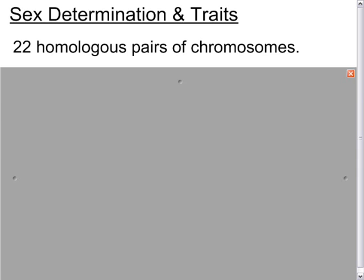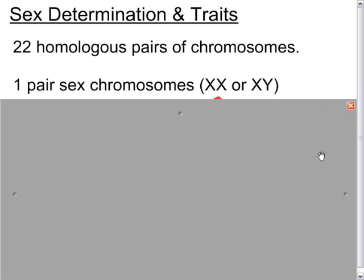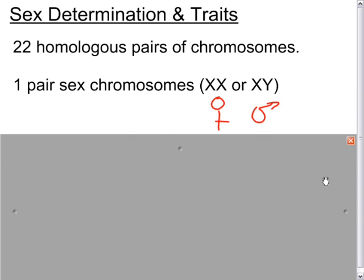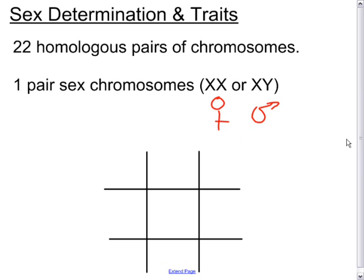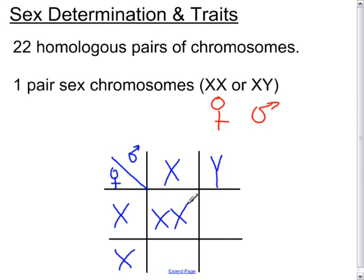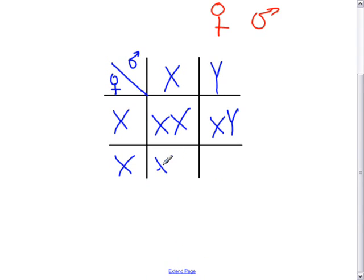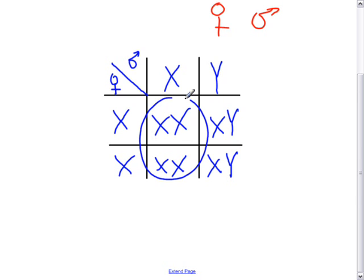This is a review video for Biology 10: sex determination and traits. All humans have 22 homologous pairs of chromosomes. The 23rd pair, however, is a bit different — it is the sex chromosomes. Females are XX and males carry a Y chromosome. For every person there is a cross between your father XY and your mother XX, giving possible offspring that are 50% male or 50% female.